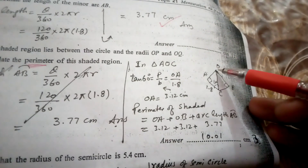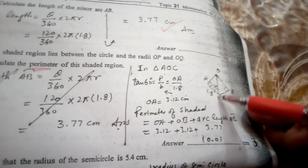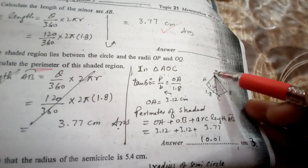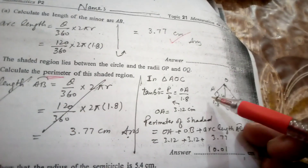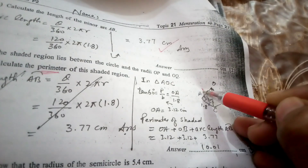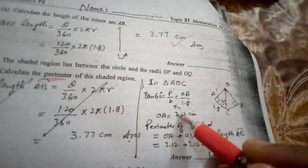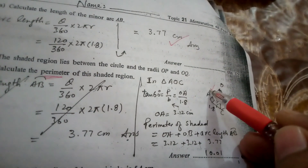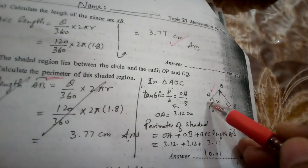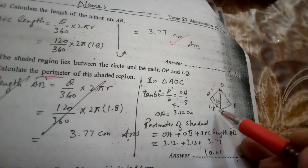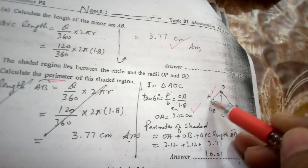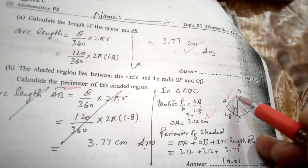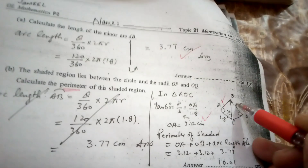Draw a line from C to form triangle OAC. The angle at A is 90 degrees (tangent), and the angle at C is 60 degrees (half of 120°), so we use tan to find OA. Since the configuration is symmetric, the length of OA equals the length of OB.